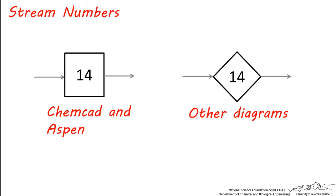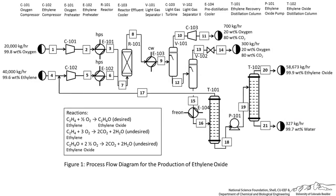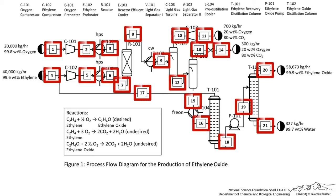The reason why these stream numbers are important is because the temperature, pressure, vapor fraction, composition, and other information related to each of these streams is provided in a stream table, which is a required supplement to every process flow diagram. Stream numbers help organize the diagram and provide identifying information for the stream table. Each stream on a process flow diagram must be numbered.